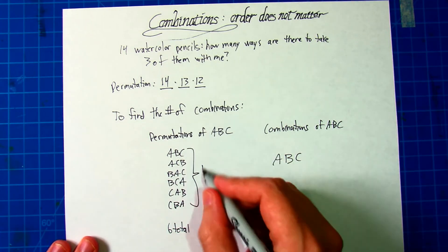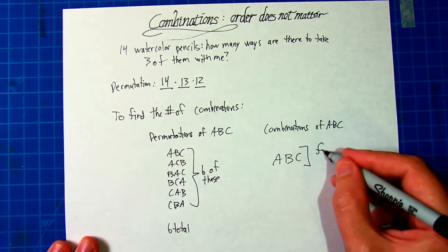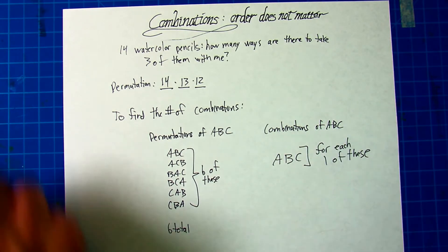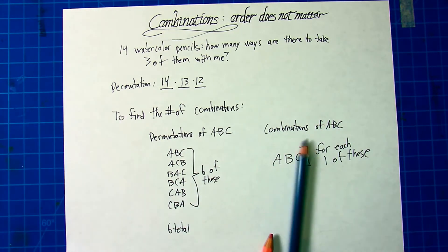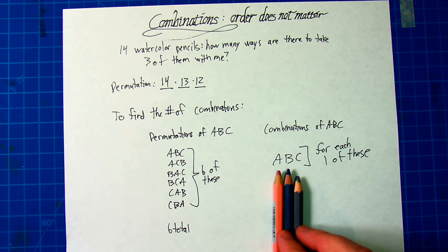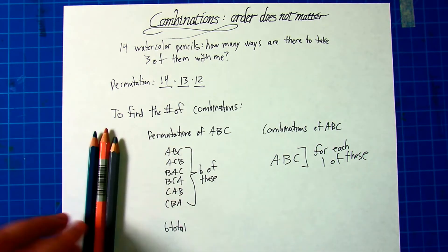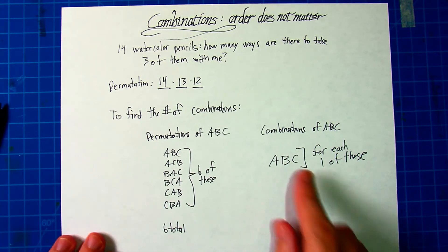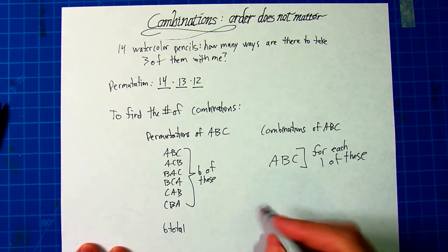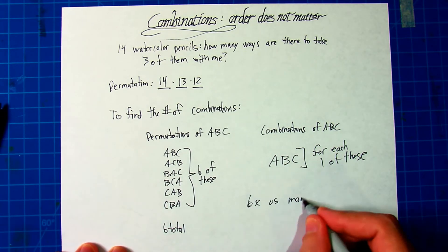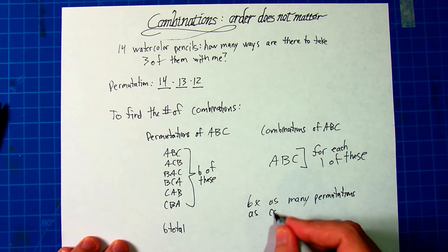So you see there's six of these for each one of these. What that means is suppose I grab these three pencils. Well for each way I can grab three of them where order doesn't matter, that means there's six ways that I can grab them where the order does matter. So you can make the conclusion that there's six times as many permutations as combinations.